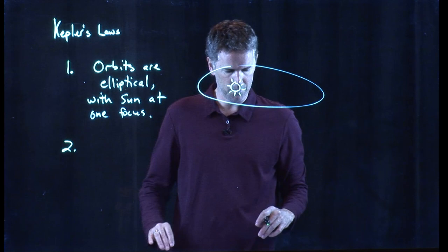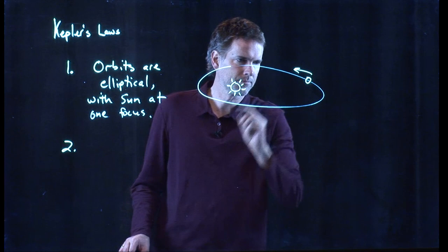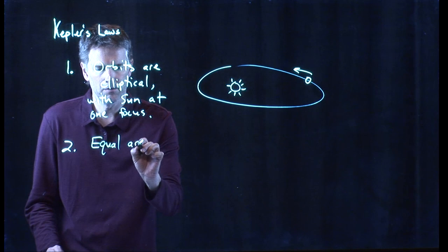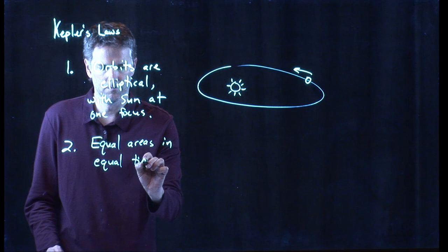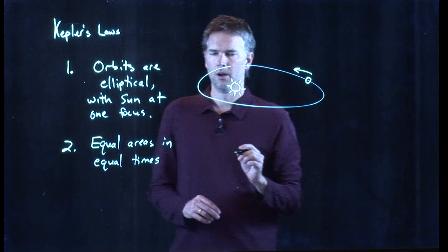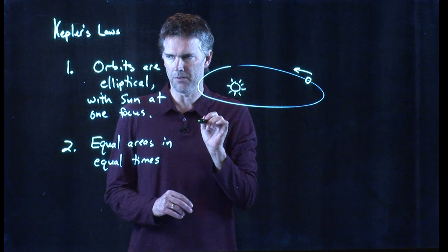The second law that he came up with was, and let's draw our planet on there heading around. The second law was the following: equal areas in equal times. So what does that mean on our picture here?